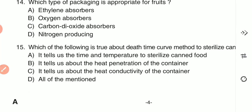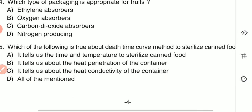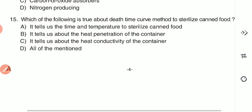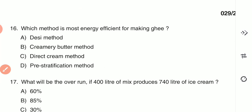Question 15: Which of the following is true about the death time curve method to sterilize canned food? (A) it tells about time and temperature to sterilize canned food, (B) it tells about heat penetration of the container, (C) it tells about heat conductivity of the container, or (D) all of the above. The answer is D — all of the above.